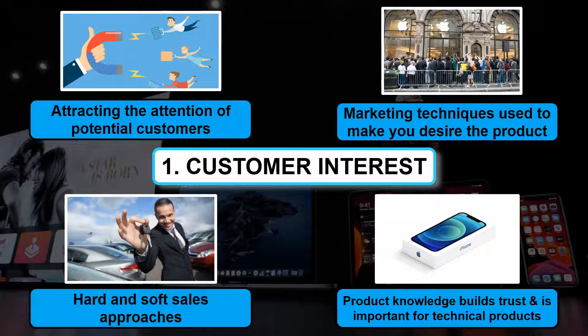A brand can build interest in a product via two different sales approaches: hard and soft sales approaches. A hard approach is when sales employees actively seek out customers and try to build interest by encouraging them to make a purchase — traditionally seen in something like car sales. Then there's a soft approach, which is the one that Apple uses, as it's based on providing the best possible information and service when needed, but does not involve a hard sell or techniques such as cold calling.